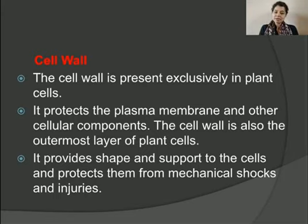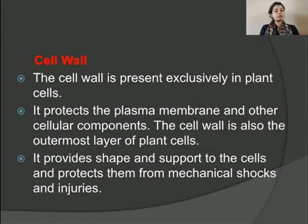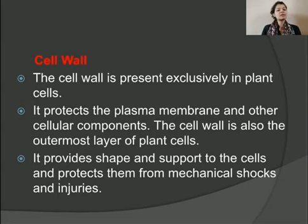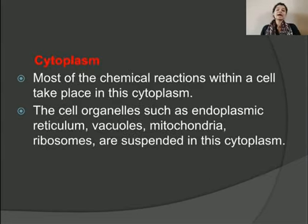In animal cells, the outermost layer is the plasma membrane or cell membrane, whereas in plant cells the outermost covering is the cell wall. The cell wall provides shape and support to the cell and protects it from mechanical shock and injuries. It is a rigid and stiff structure which surrounds the cell membrane and is only present in plant cells.